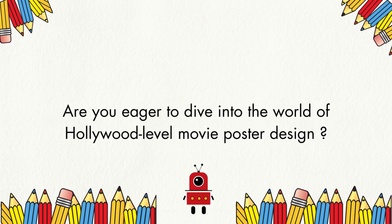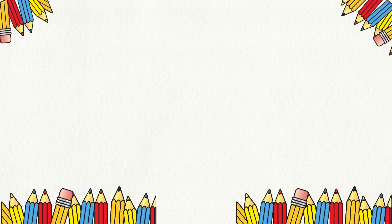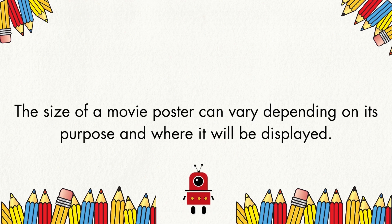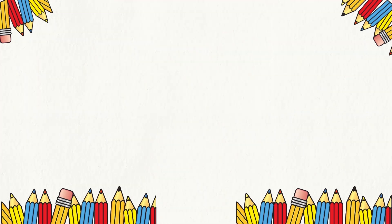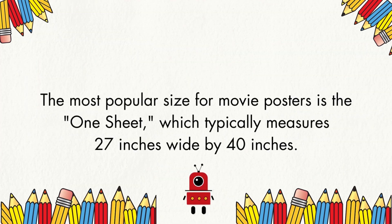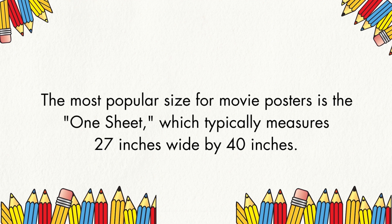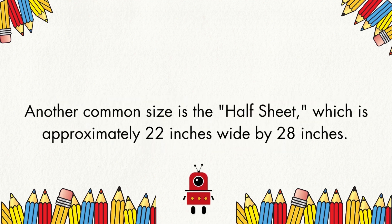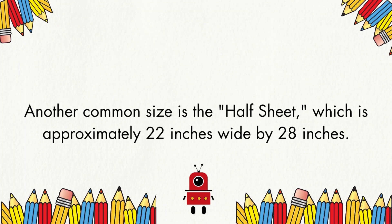Are you eager to dive into the world of Hollywood level movie poster design? The size of a movie poster can vary depending on its purpose and where it will be displayed. The most popular size is the one sheet, which typically measures 27 inches wide by 40 inches. Another common size is the half sheet, which is approximately 22 inches wide by 28 inches.